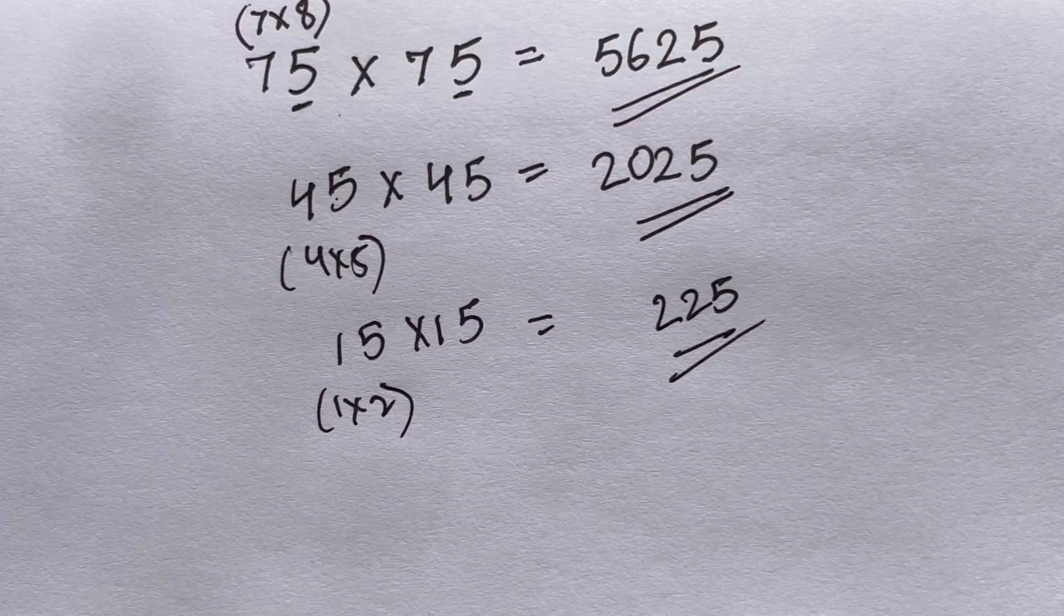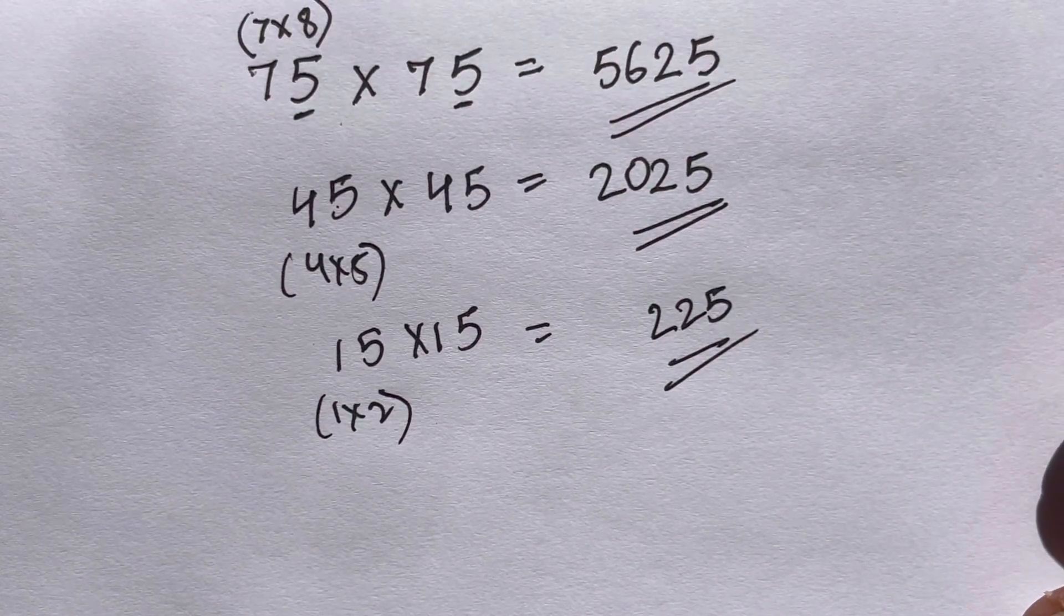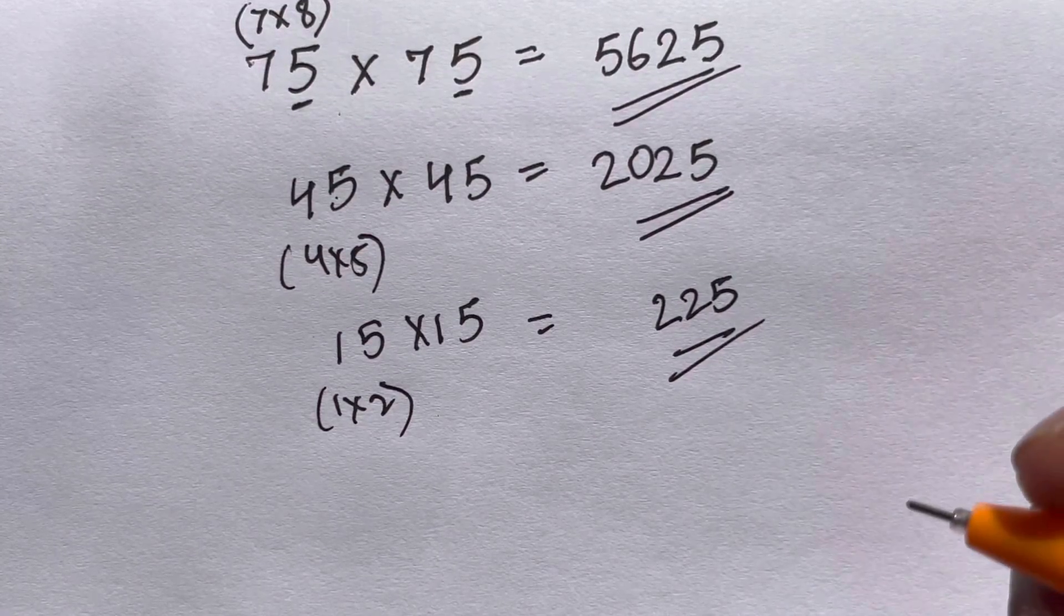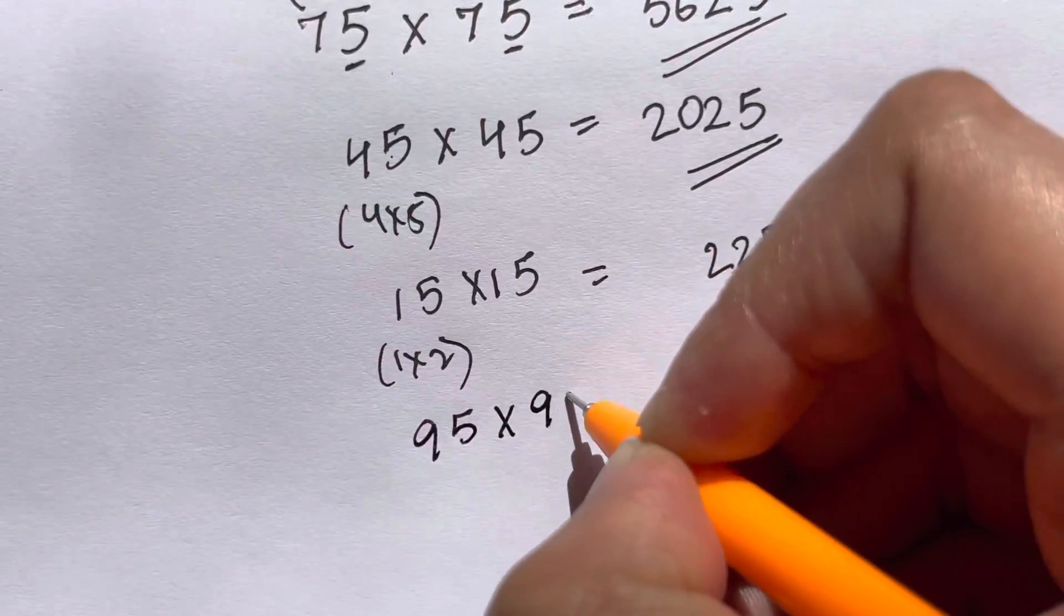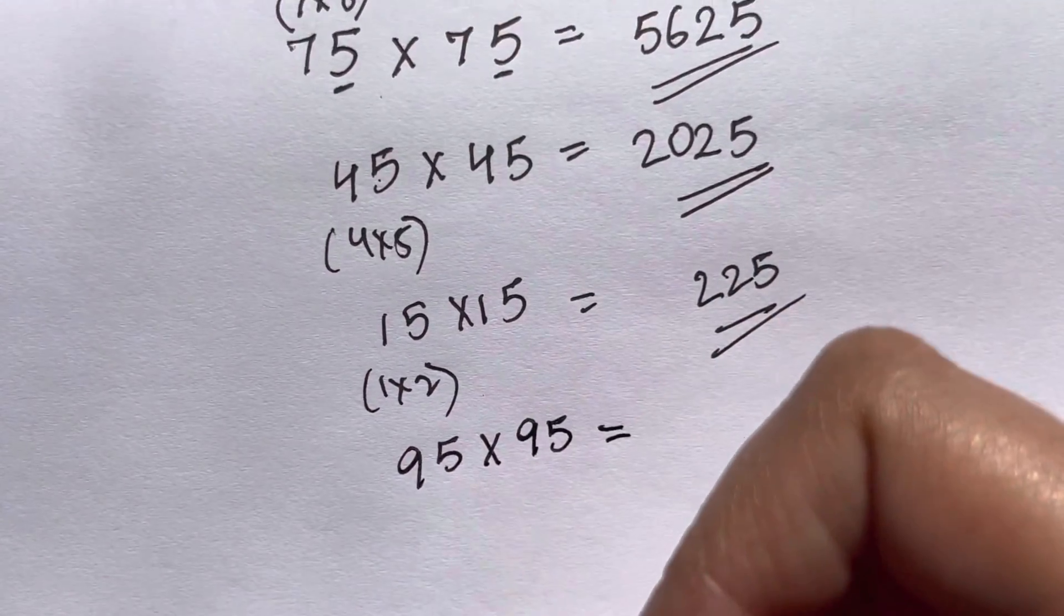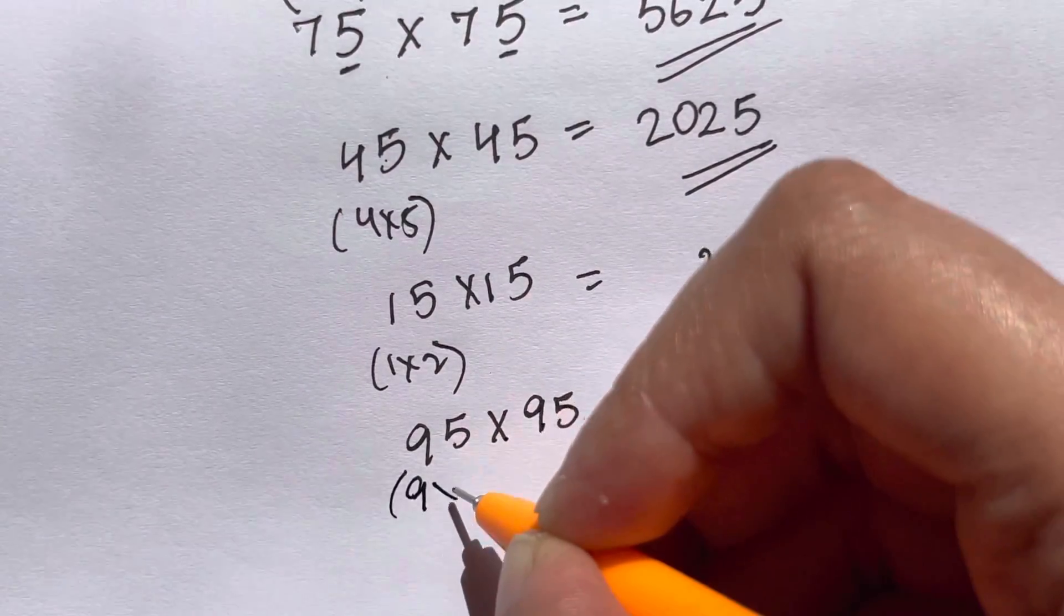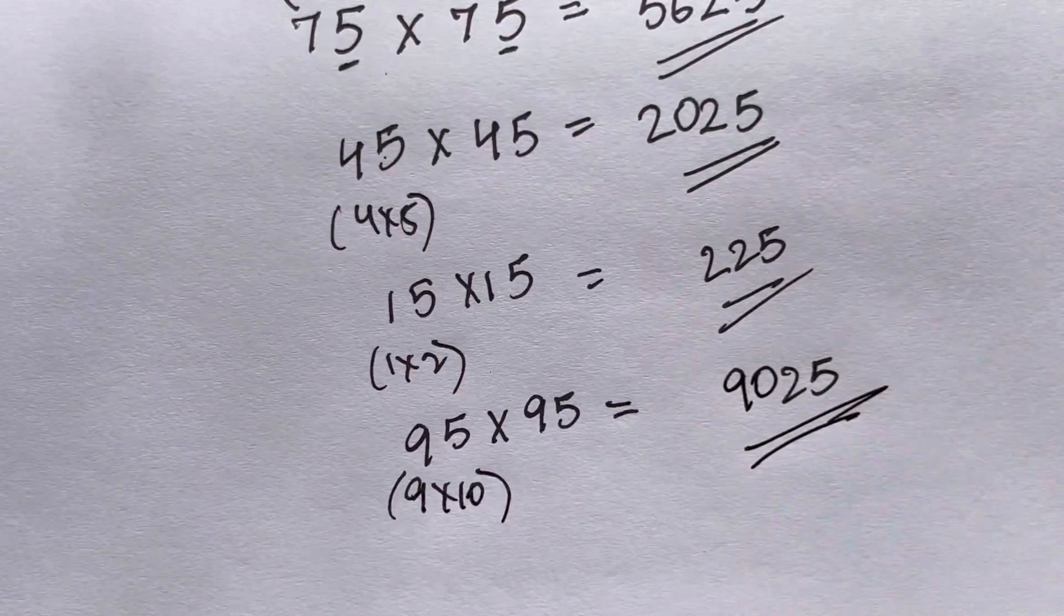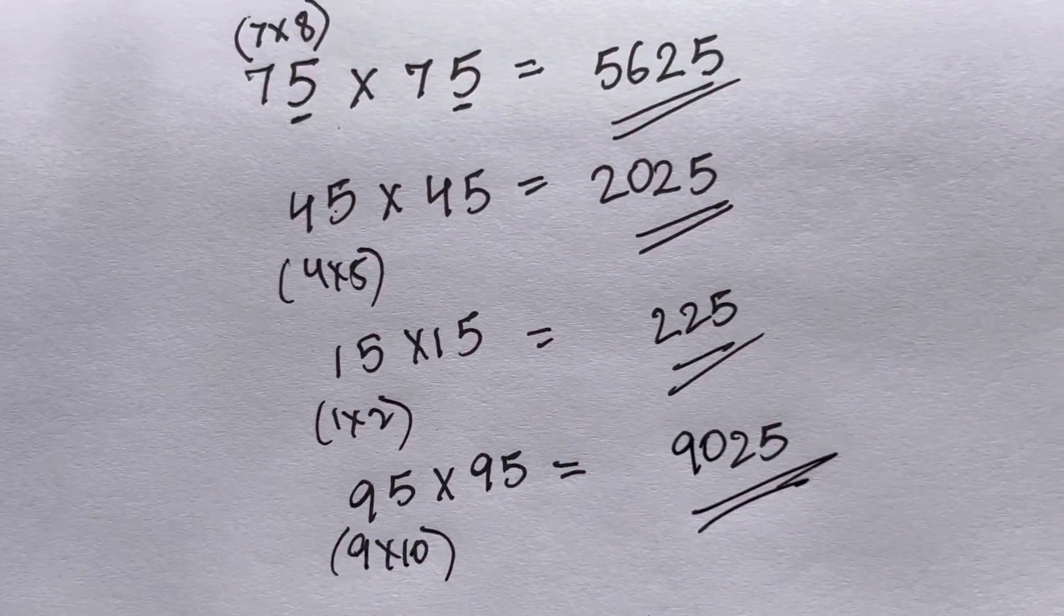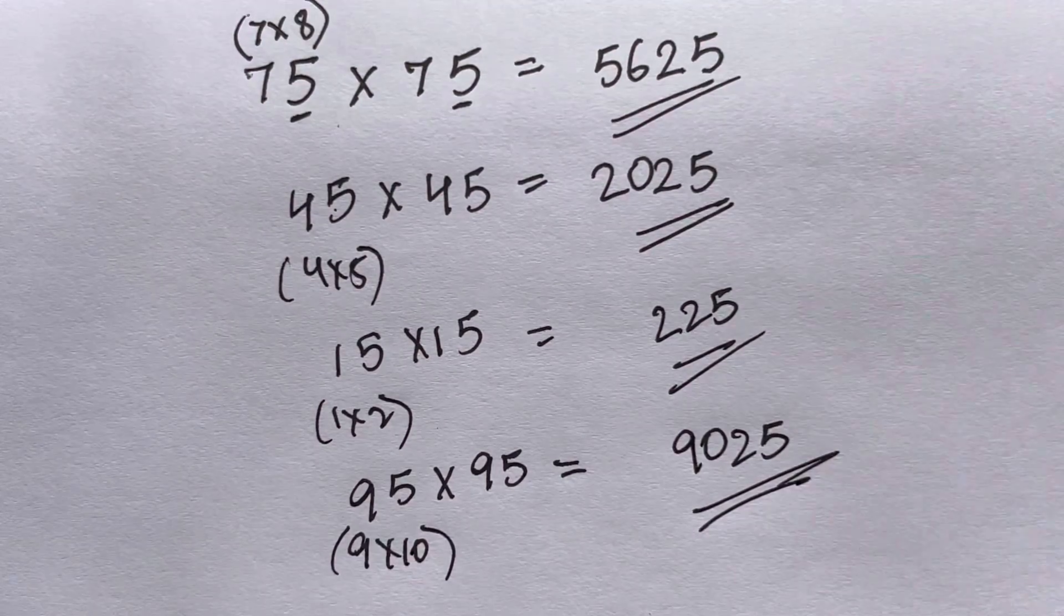Your mind is slowly becoming a calculator, isn't it amazing? Let me give you another example: 95 times 95. 5 times 5 is 25. After 9, you have 10, so 9 times 10 is 90. And that's your answer: 9025.